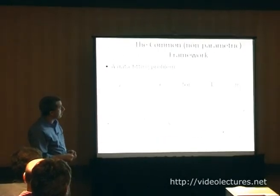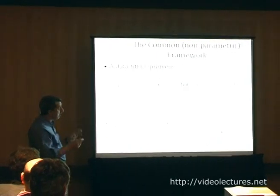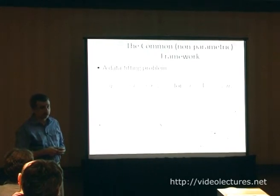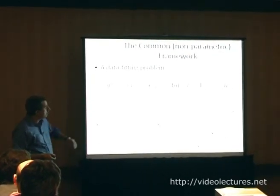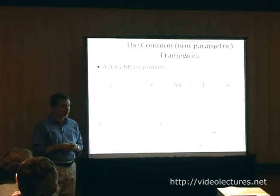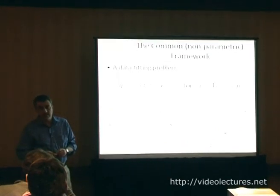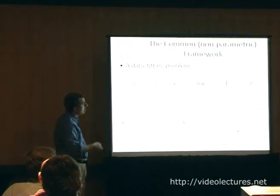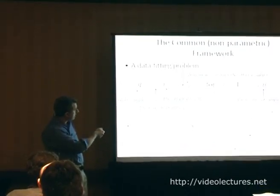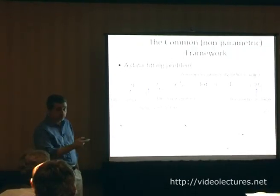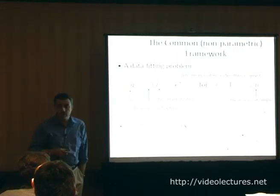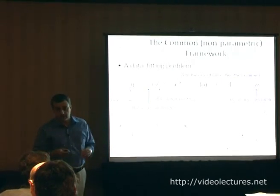The common framework for all of these concepts is basically nonparametric ways of estimating functions, or point estimation procedures as they are known in statistics. The problem is a data fitting problem. Consider the problem of denoising, where you're given an image or a video and you'd like to reduce the amount of noise present. So y_i here are the noisy pixels, z(x_i) are pixel values at position x_i, and e here is the error. z is what we call the regression function — the function we try to fit. The noise is assumed to be zero mean, i.i.d., but we make no other distributional assumptions — not Gaussian, not Laplacian, just that.